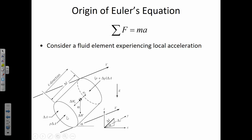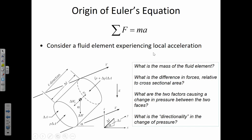Euler's equation describes the fluid element experiencing local acceleration. We consider the mass of the fluid element because it affects the weight, and depending on the volume, the unit weight of the fluid. Euler's equation takes into account differences in forces relative to the cross-sectional area — those differences in forces are what actually causes it to accelerate. That's why there's acceleration: an imbalance of external forces.